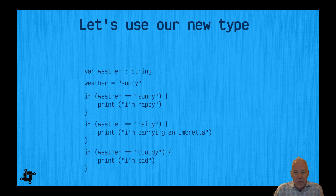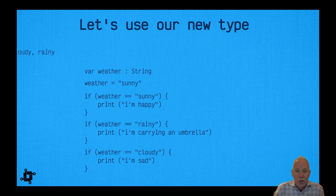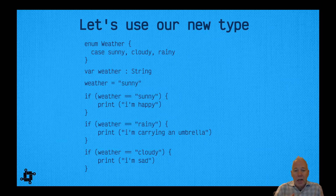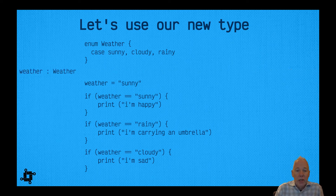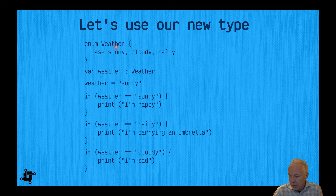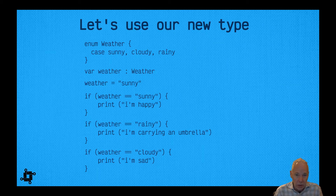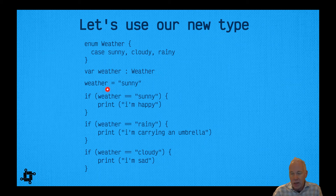Let's use this new type. This is the old code before the enumeration. We add our enum Weather type with cases sunny, cloudy, and rainy — just as declared. Then we replace the string definition and say var weather is of type Weather. Notice the variable uses a lowercase w, while the type Weather uses a capital W referring to the enumeration.